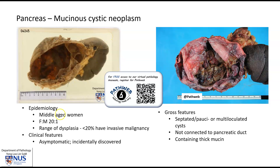These are relatively rare neoplasms that tend to occur almost exclusively in women. As mentioned, there can be a range of dysplasia from low to high-grade or even invasive adenocarcinoma within the tumor. Often these tumors are asymptomatic, and they are usually incidentally discovered when the patient undergoes abdominal imaging for other reasons.